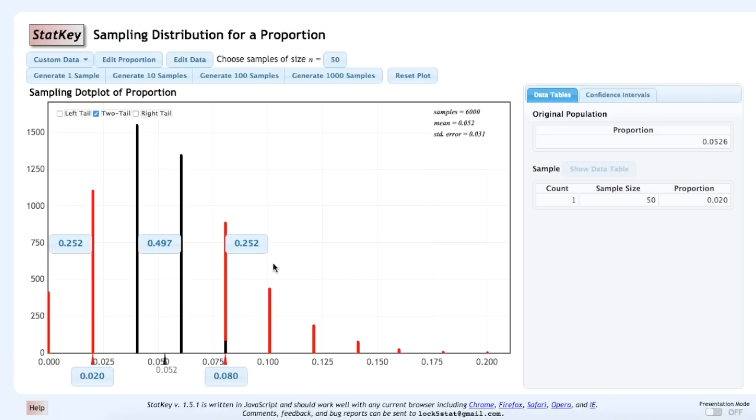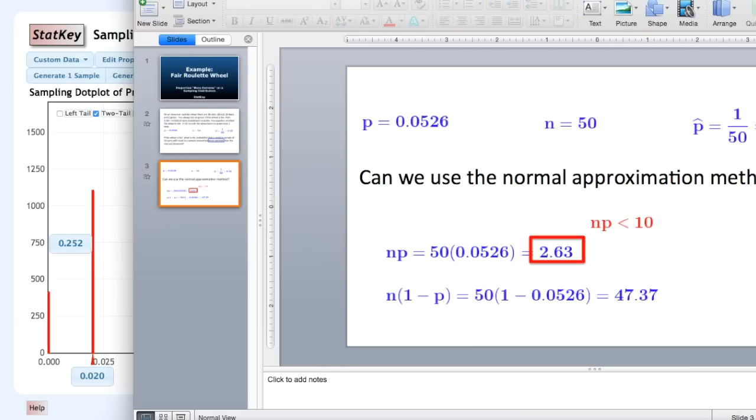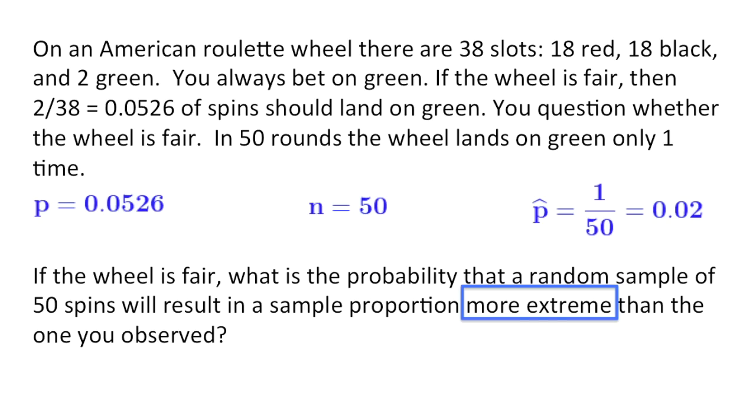So, the final answer to this question is 0.504. If the wheel is fair, then 0.504 of random samples of 50 spins will result in a sample proportion more extreme than the one that we observed.